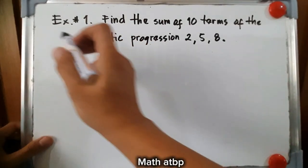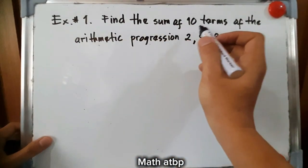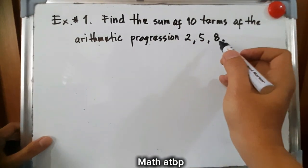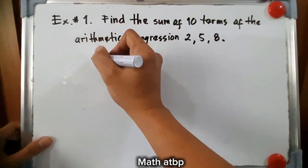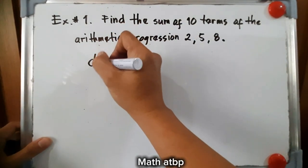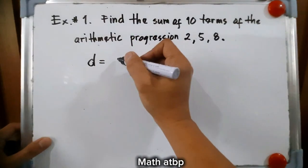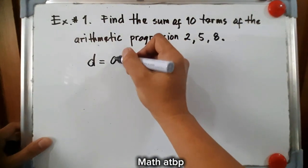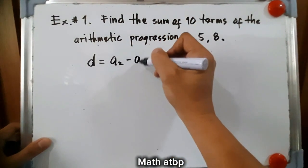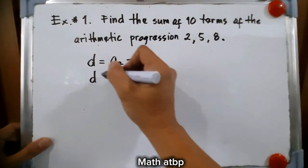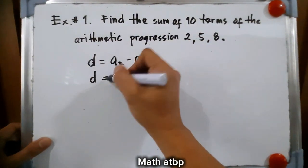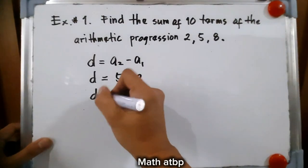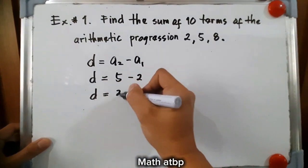Let's proceed with example number 1. Find the sum of 10 terms of the arithmetic progression 2, 5, and 8. First, let us define the difference. The difference can be obtained by subtracting two consecutive numbers, so it is a sub 2 minus a sub 1. The difference d is equal to 5 minus 2.